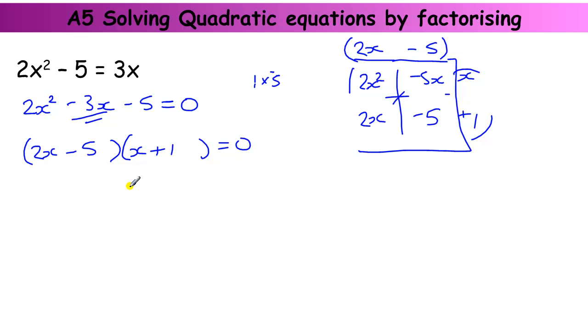Once we've got that, this is the main part. This is to figure out what makes this 0. Well, if this bracket equals 0, if this whole bracket equals 0, then 0 times whatever this is, it's going to be 0. So 2x minus 5 equals 0 is one solution.